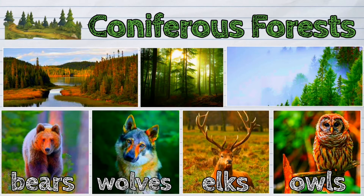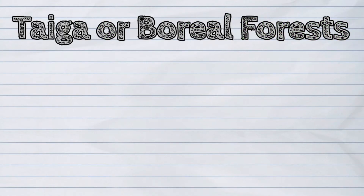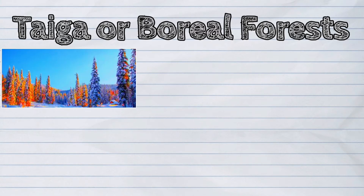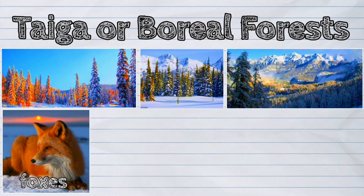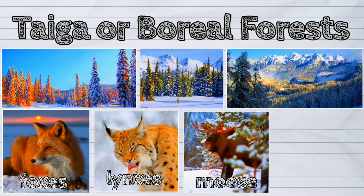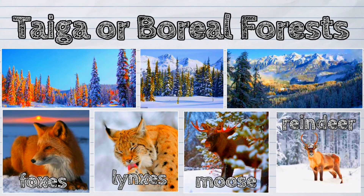The taiga or boreal forests are another type of habitat for animals. A boreal forest can be found in most parts of Northern America. Some animals that live in this region are the foxes, lynx, moose, and reindeer.